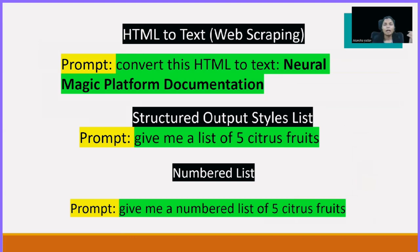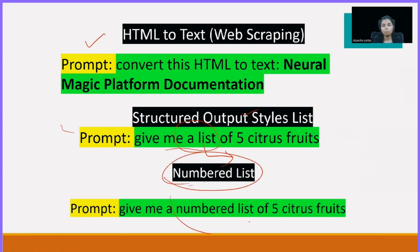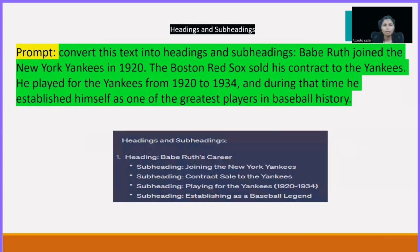HTML to text is also possible — sometimes we perform web scraping from HTML to extract content from a URL. You can also generate structured output: if you want a bulleted list, write 'word list'; if you want a numbered list, write 'numbered list.' Similarly, if you have a paragraph and want headings and subheadings — for example for a school essay — you can write 'convert this text into headings and subheadings.'